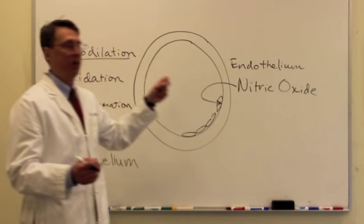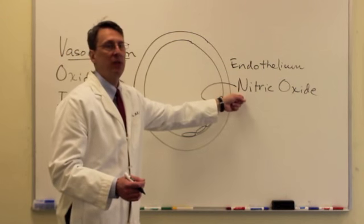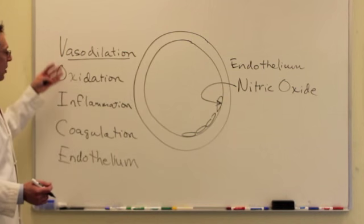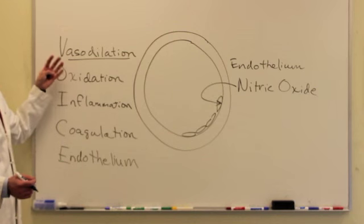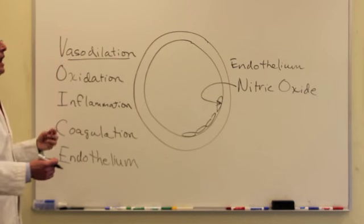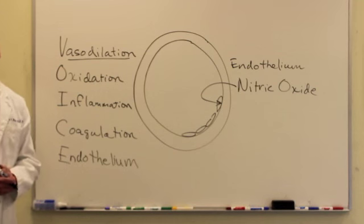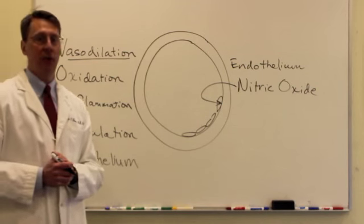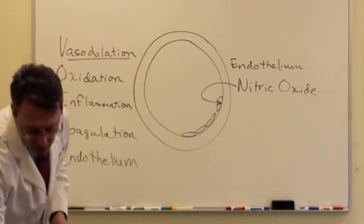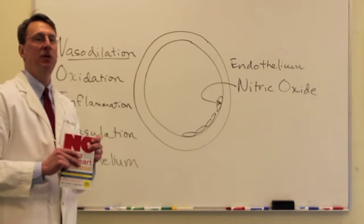So just to review, the endothelium produces the nitric oxide, which gives us all of these beneficial attributes. And we can help to improve the production of nitric oxide with the addition of supplemental arginine. Now that's what this book is about. It only took us a minute to give you the big idea.